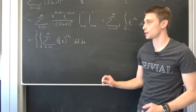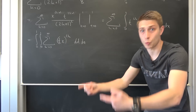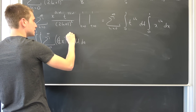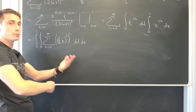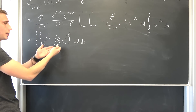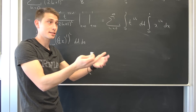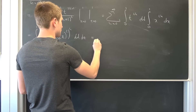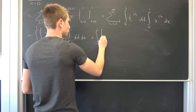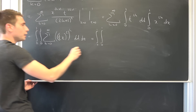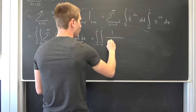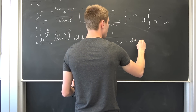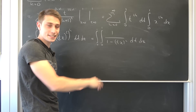tx to the 2k power is nothing but t times x squared to the k power. On this interval, t times x squared is between 0 and 1, so we can turn this into the geometric series, leaving us with a double integral from 0 to 1 of 1 over 1 minus t times x squared, integrated with respect to t and with respect to x.